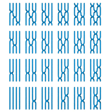Braid Index. The "braid index" is the least number of strings needed to make a closed braid representation of a link. It is equal to the least number of Seifert circles in any projection of a knot.